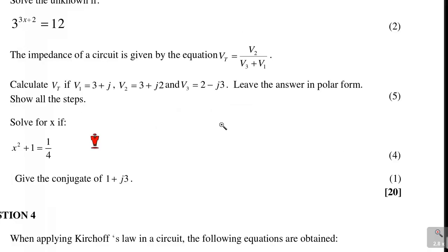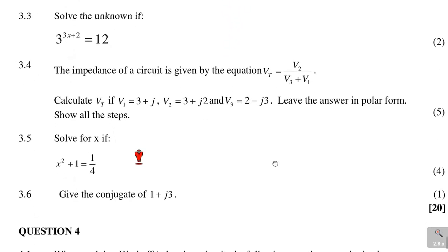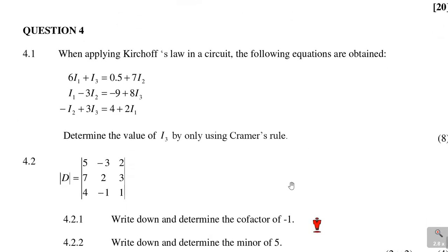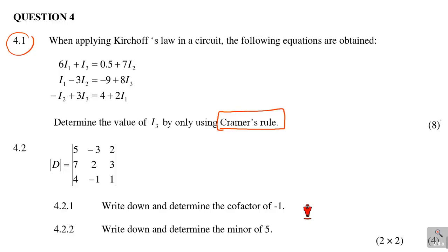In this exam paper from November 2020, we're looking at question 4, which is worth marks. Question 4.1 says: when applying Kirchhoff's Law in a circuit, the following equations are obtained. The question asks us to determine the value of i3 by only using Cramer's Rule — that's 8 marks. But I want us to also find i2 and i1 using Cramer's Rule.